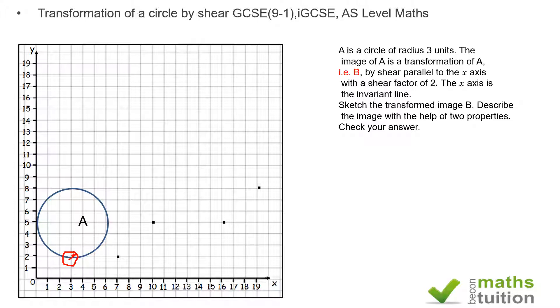In effect, you can do as many points as you like and check this out. In an exam situation, do two or three more points just to be sure. What I've got here then is an ellipse, and that's my image B.